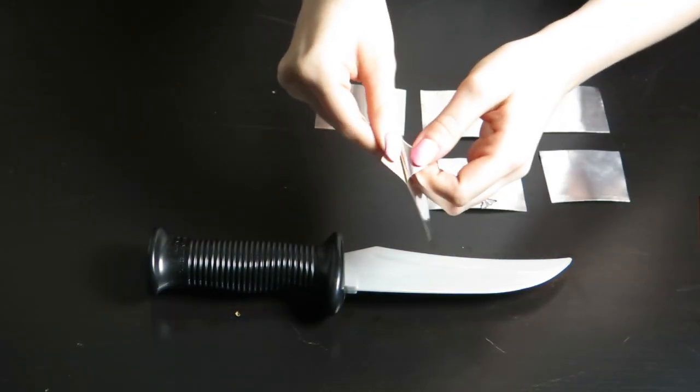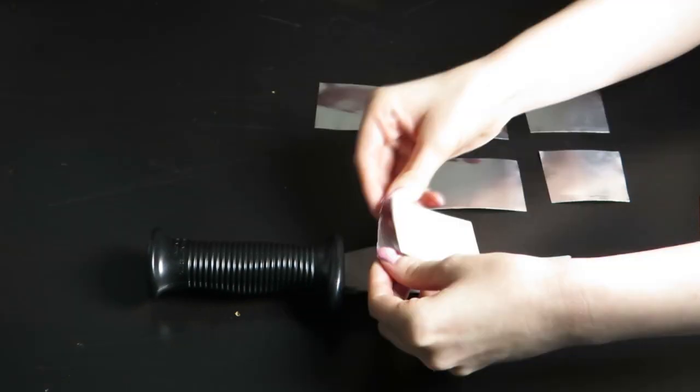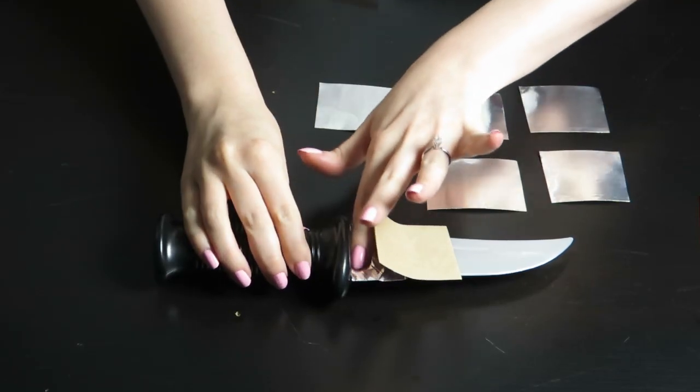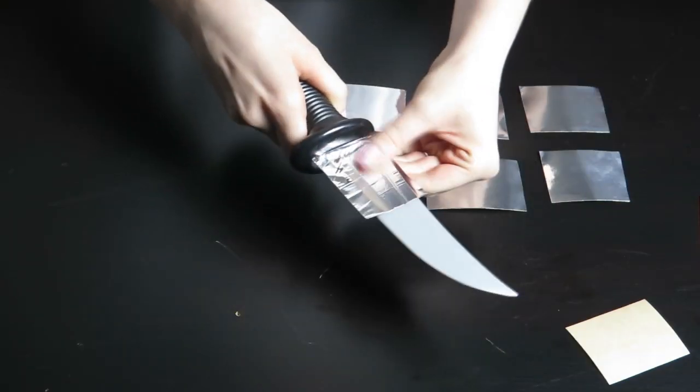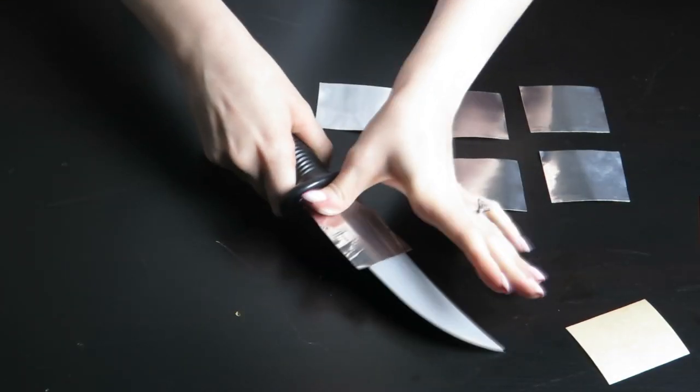Peel a corner of tape away from the paper and gently roll it up about halfway. Place the edge of the tape as close to the handle as possible. Then slowly peel the rest of the tape away from the paper while smoothing it over the blade at the same time.